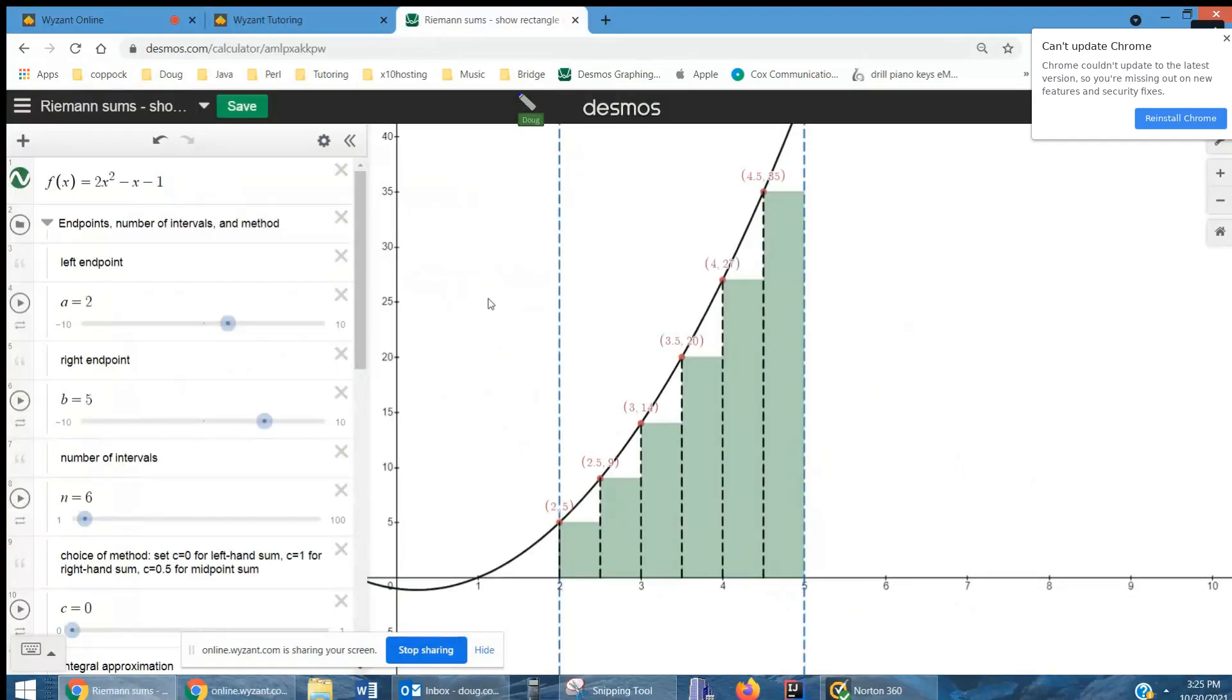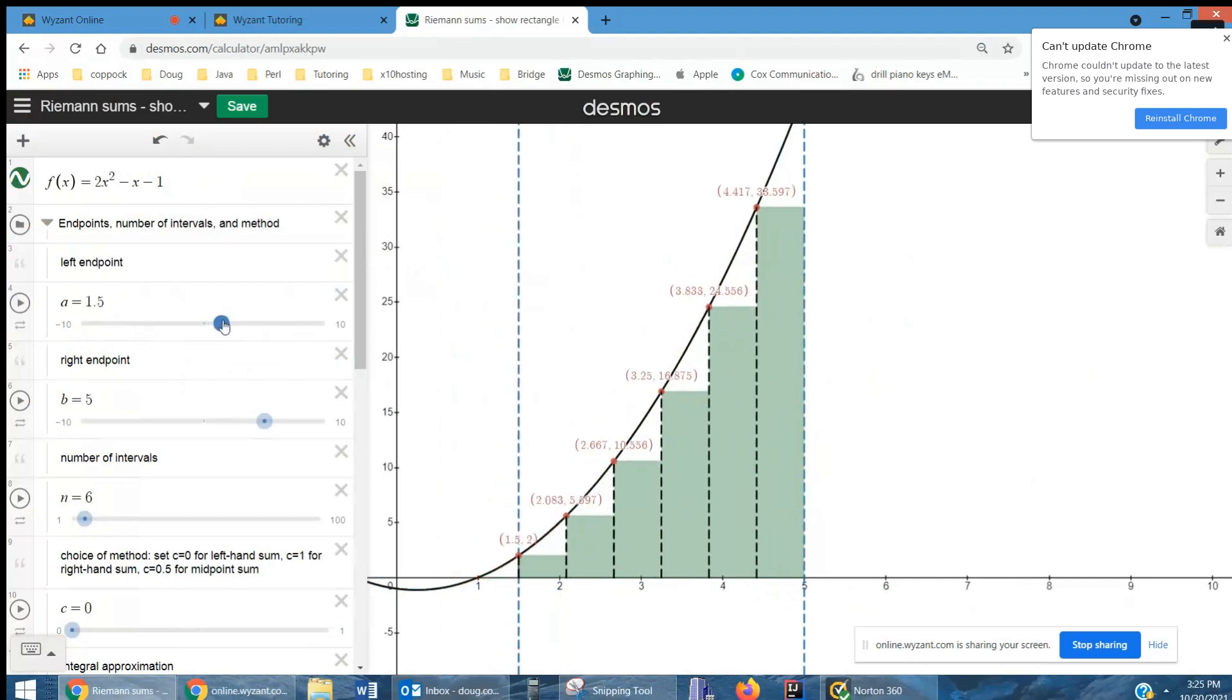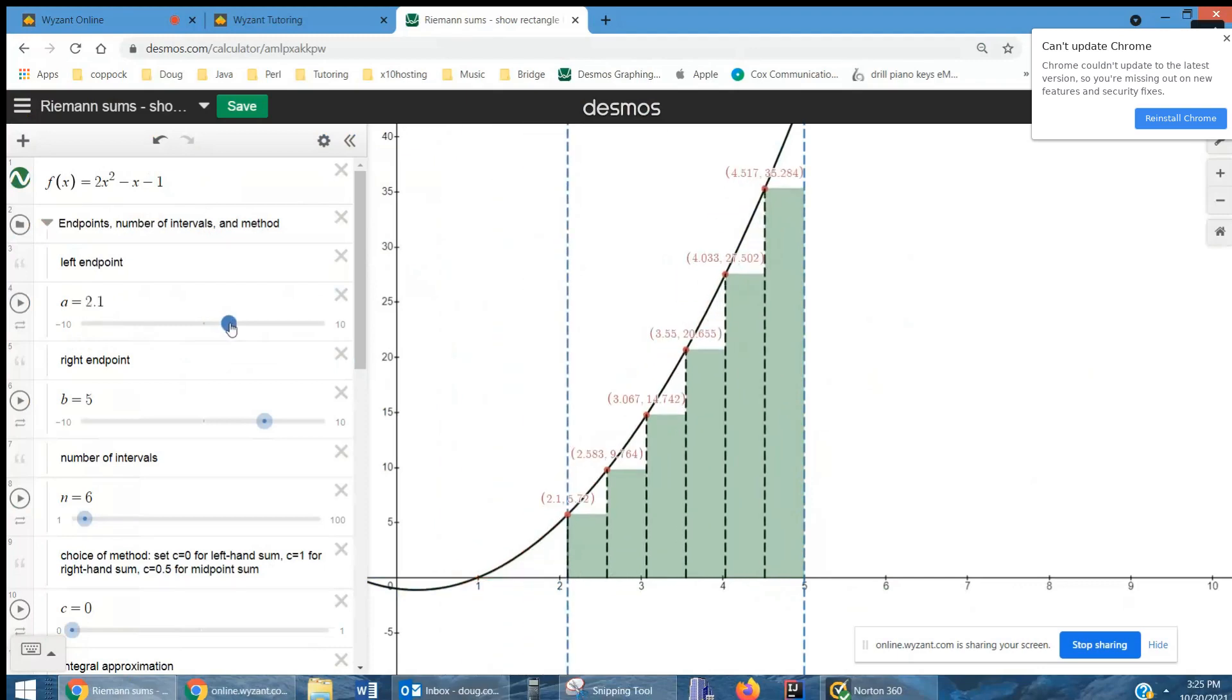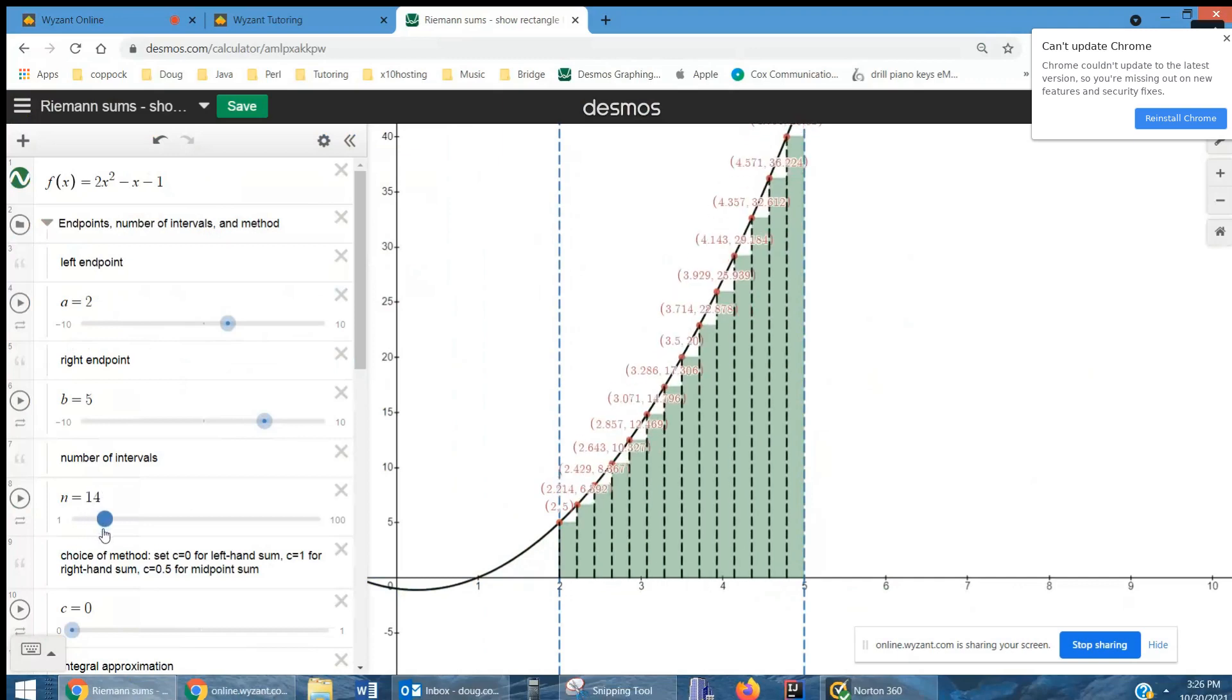Now I'm sharing my screen. I'll go to Desmos and show you where I got that picture. Here you can take any function you want, 2x squared minus x minus 1. Specify the left-hand endpoint with a slider, so here I had it set to 2. Specify the right-hand endpoint, B. Specify the number of intervals. So you can increase the number of rectangles.